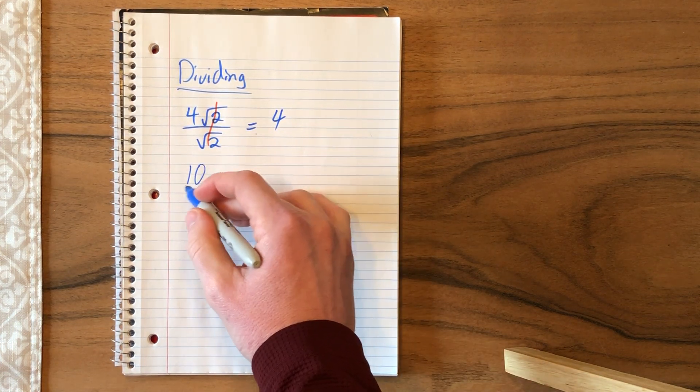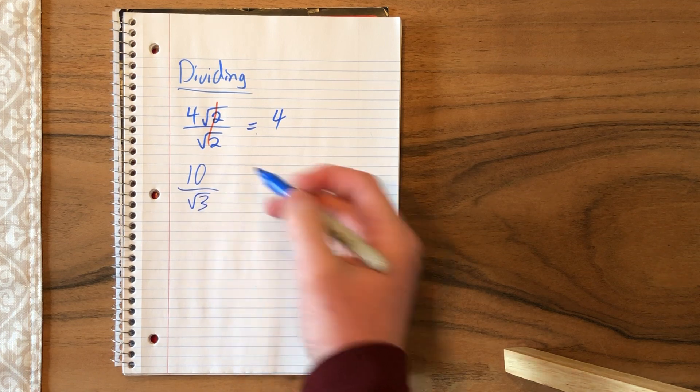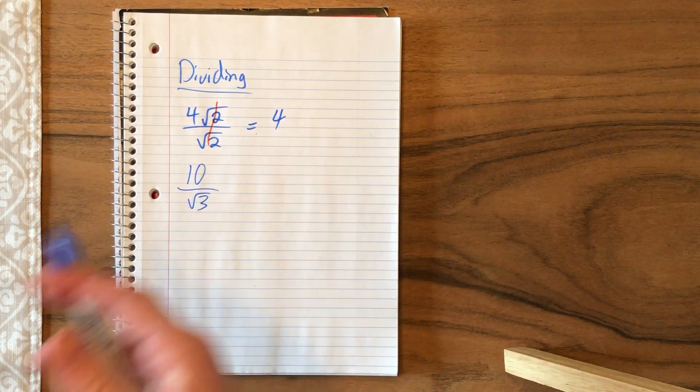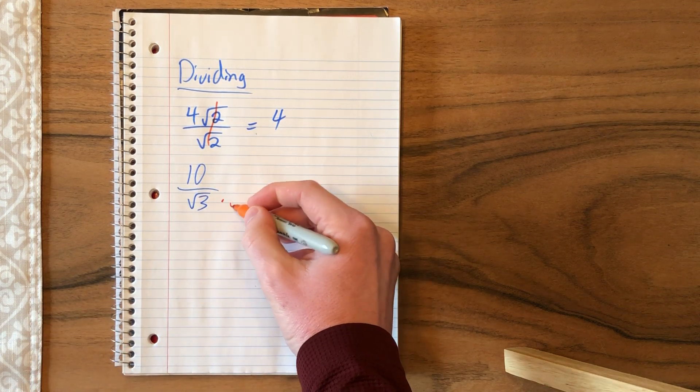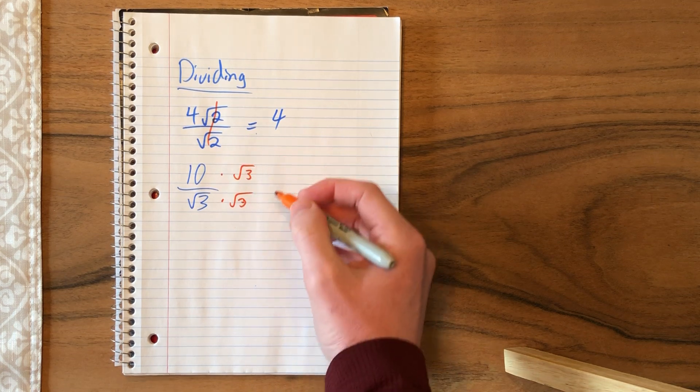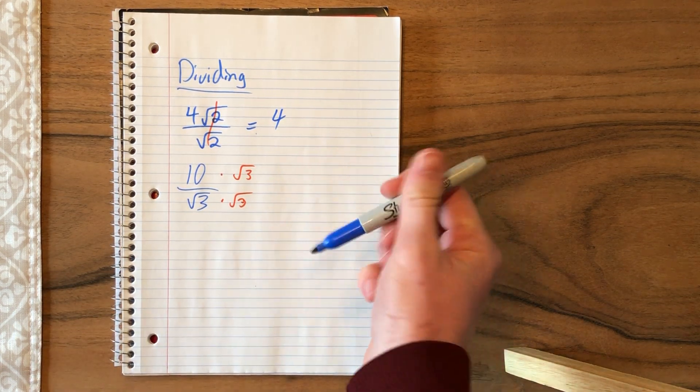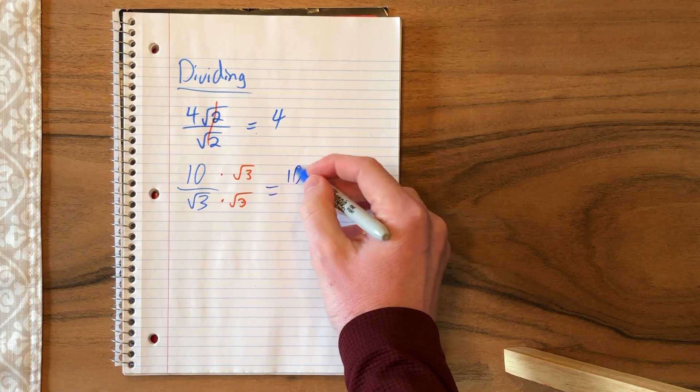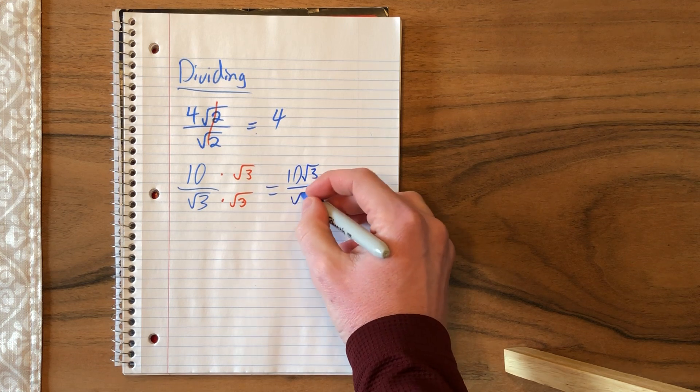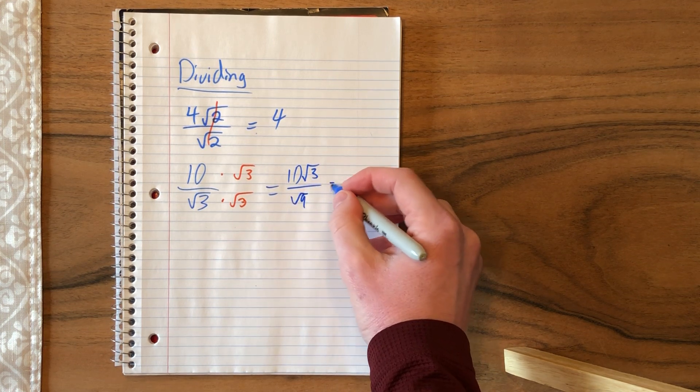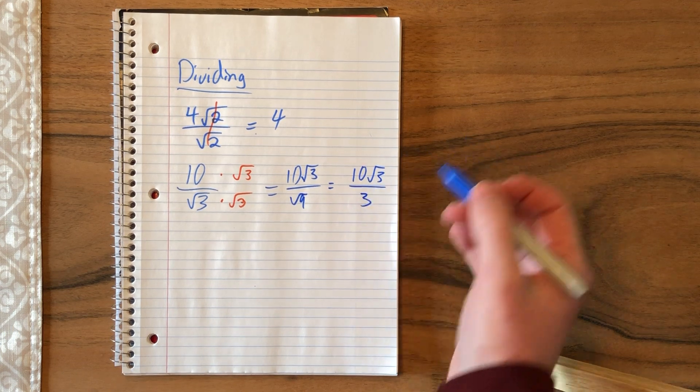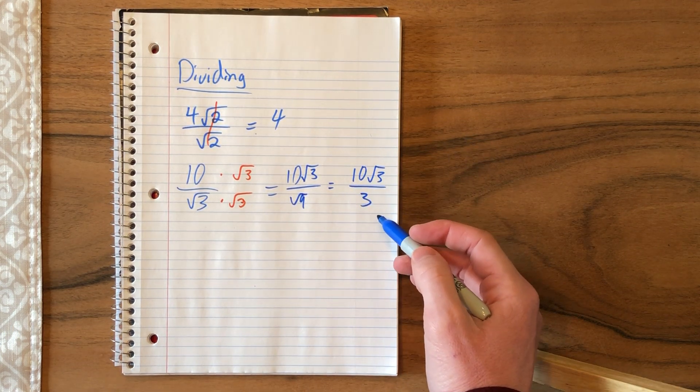However, if we divide a number, let's take 10 for example, by root 3, it's not on top, we can't cancel it out. And what you end up having to do is rationalize your denominator. So you multiply by that square root on top and bottom. So now on top, we have 10 root 3. And on bottom, root 3 times root 3 is root 9, or the square root of 9 is 3. So we would just write it 10 root 3 over 3.